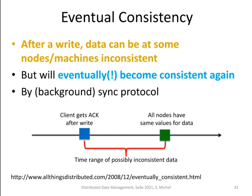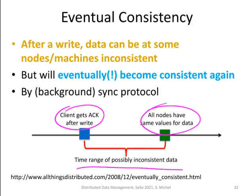Eventual consistency spans from the point in time when the write was not yet processed by all nodes, until the point when eventually the write is processed by all nodes. The time point when the client receives the acknowledgement after W writes have been processed, up to the point when all nodes have the updated value — this time in between is the time of possibly inconsistent data, also dependent on the number of reads we are doing, i.e., the number of nodes we are reading from.